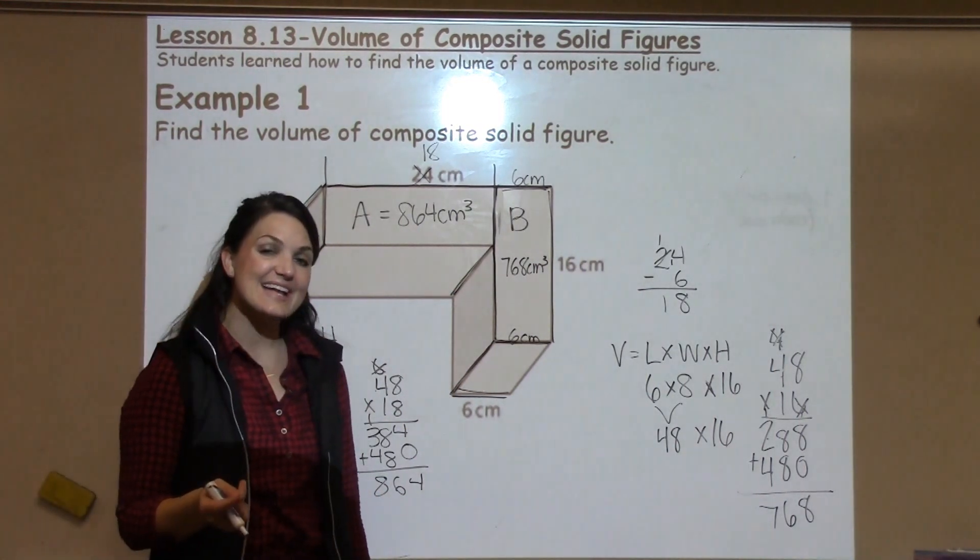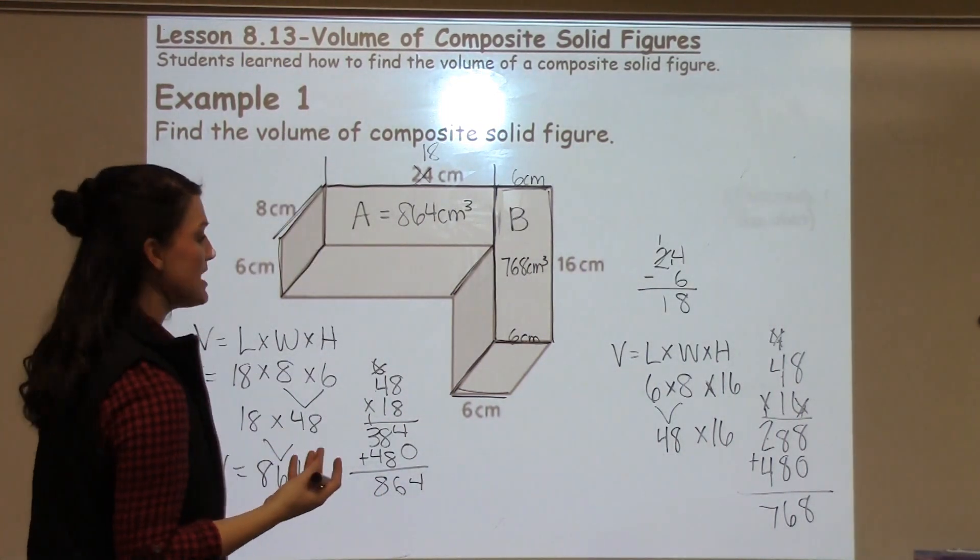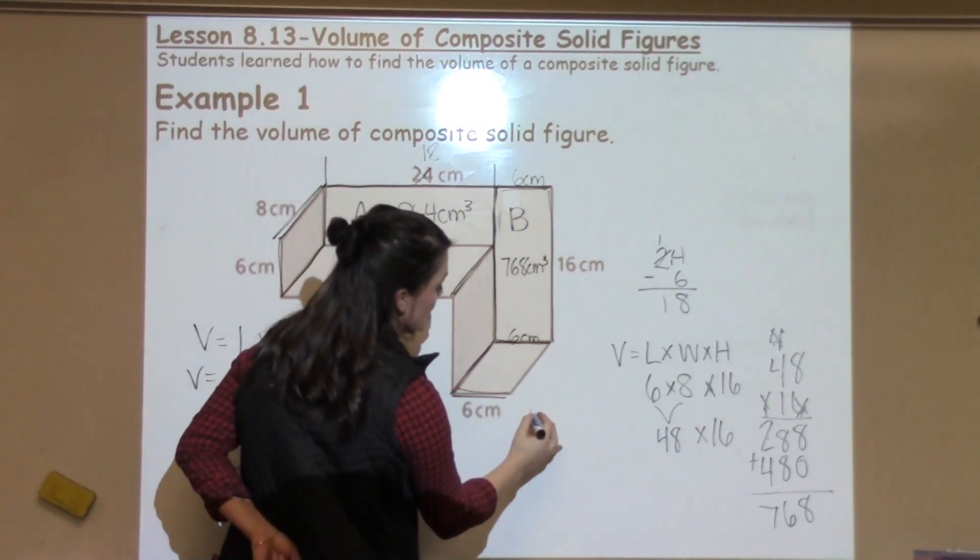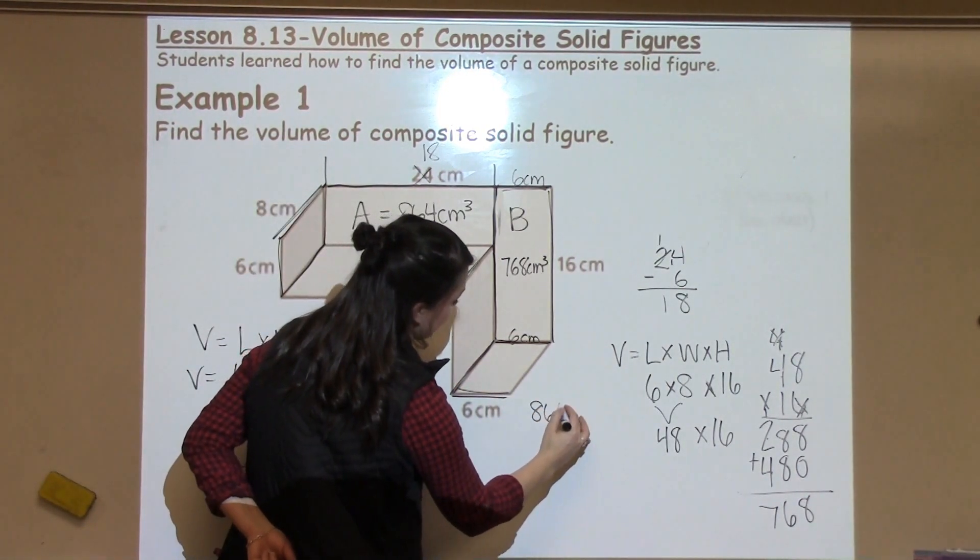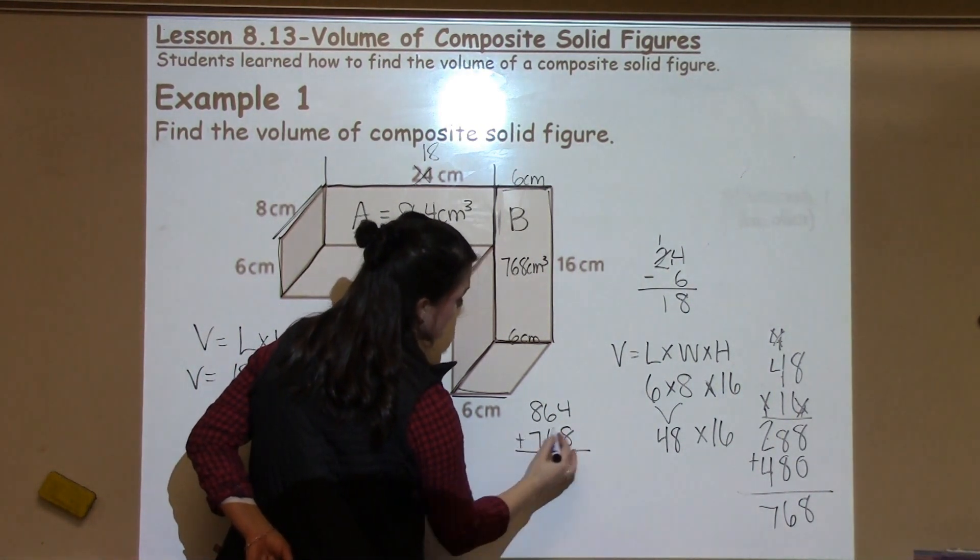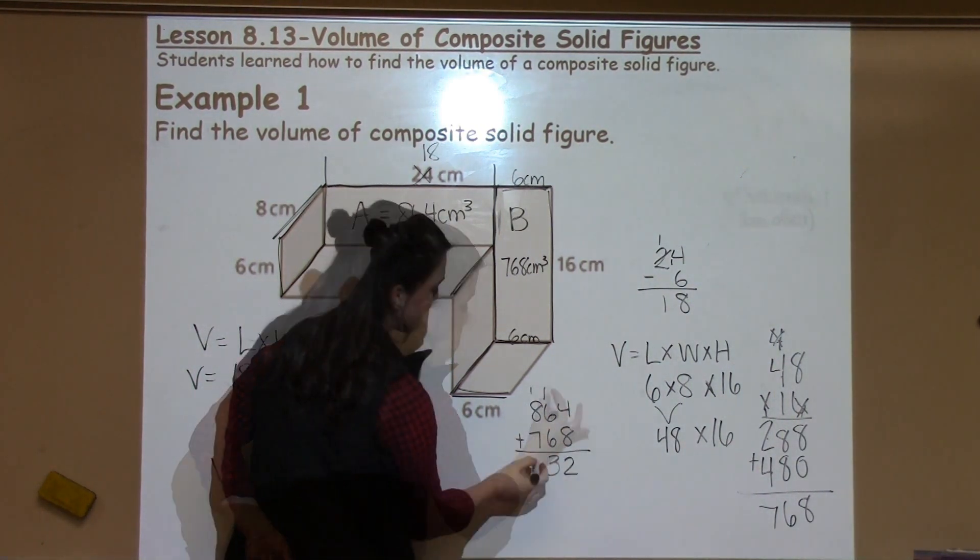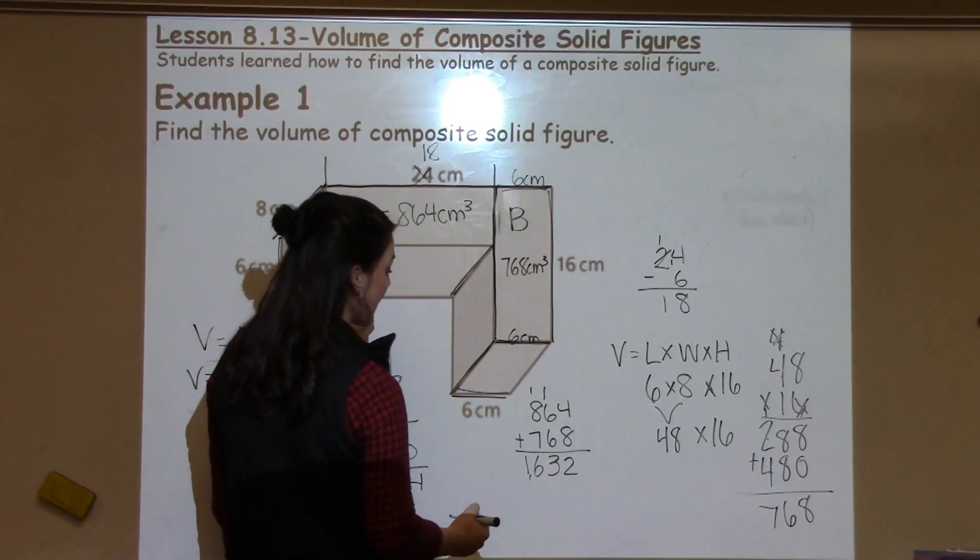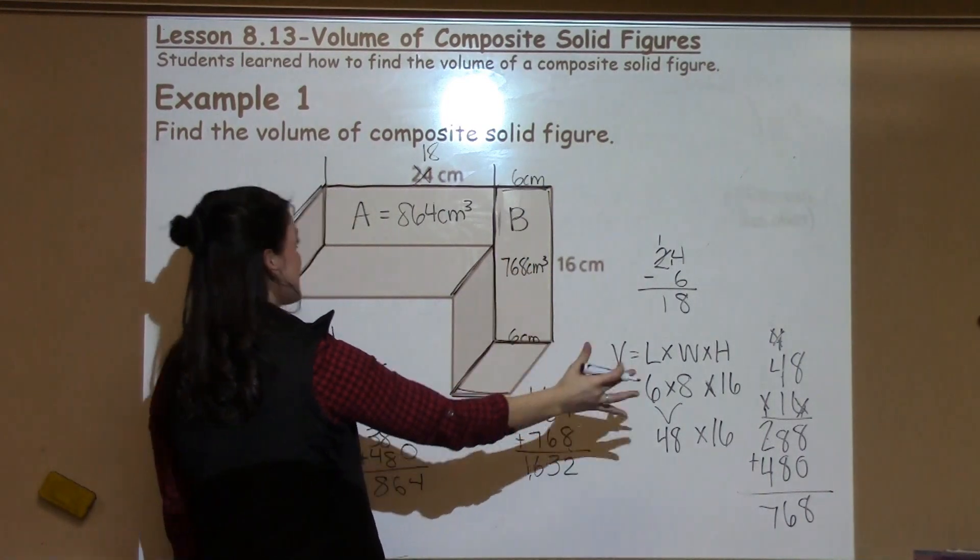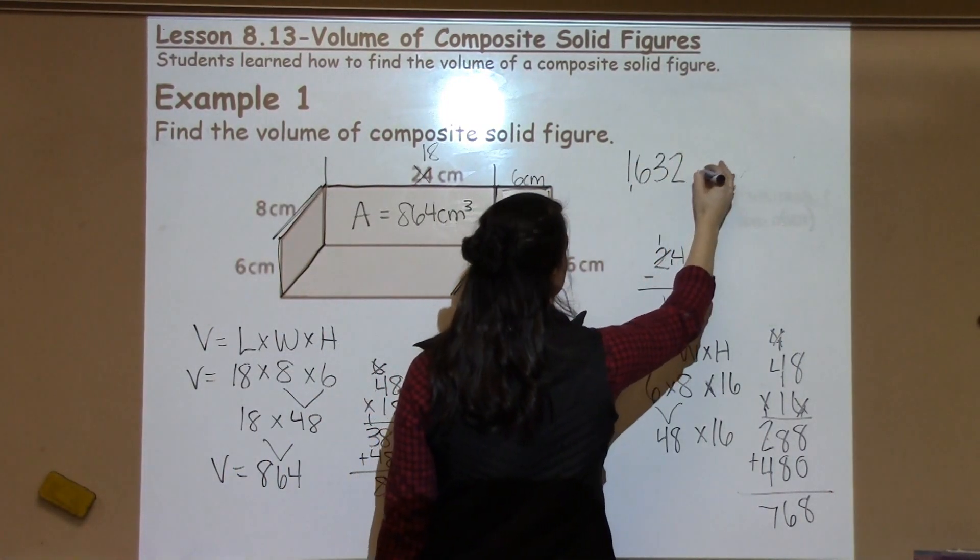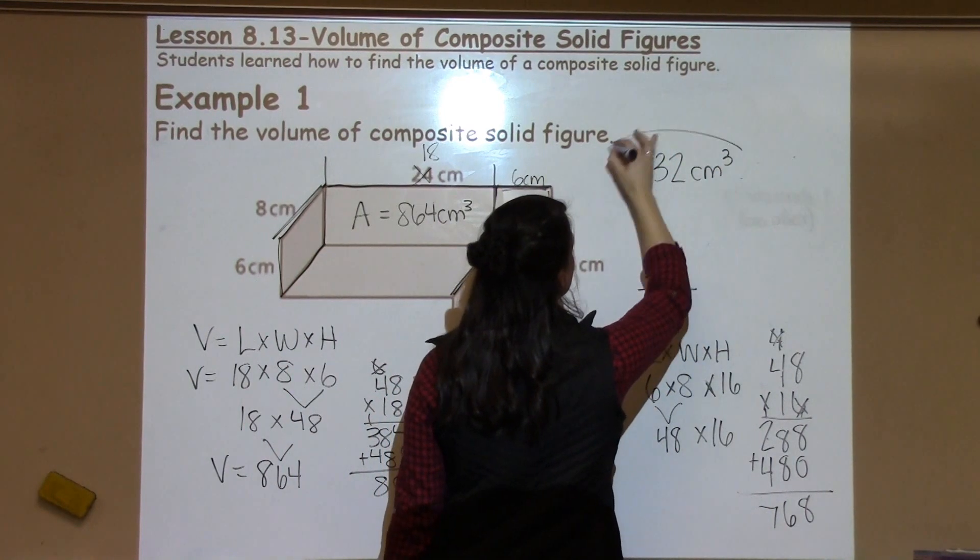I'm still not done because I need to figure out the whole volume of the entire composite shape. In order to do that, I need to add together 864 and 768 to find my total volume. Eight plus seven is 15, plus one is 16. And then I get a final volume of shape A and B, this whole composite shape, of 1,632 centimeters cubed.